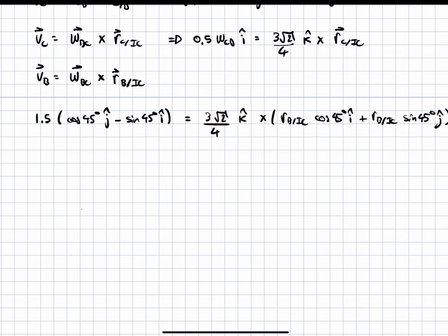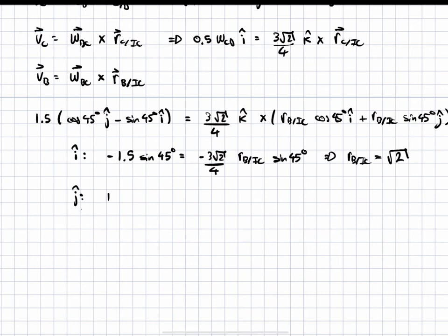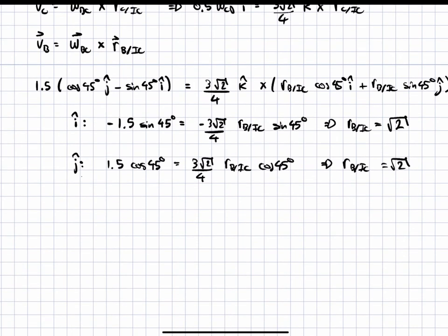Solving the cross product for R of B with respect to IC: in the i-hat direction, negative 1.5 sin(45°) equals negative (3√2)/4 times R_B/IC times sin(45°), which yields R of B with respect to IC equals root 2. Checking in the j-hat direction: 1.5 cos(45°) equals (3√2)/4 times R_B/IC times cos(45°), which also yields root 2. So R of B with respect to IC equals root 2.